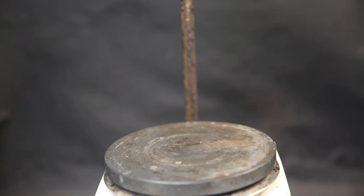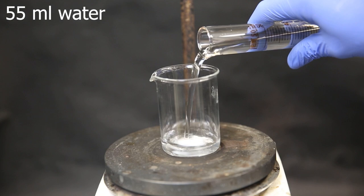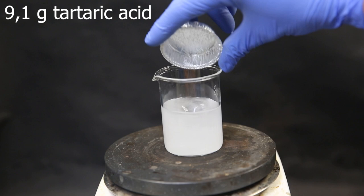When everything had reacted, I start preparing another solution. So I set up a new beaker, add in a stir bar and add in 55 mils of water. Then I add in 9.1g of tartaric acid. I allow everything to dissolve and then take it off. Now that this is prepared, we can start the reaction.